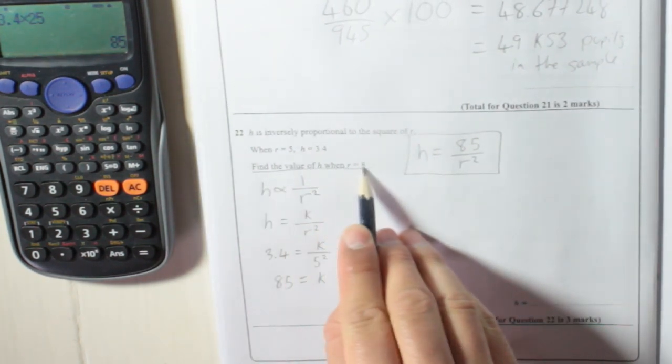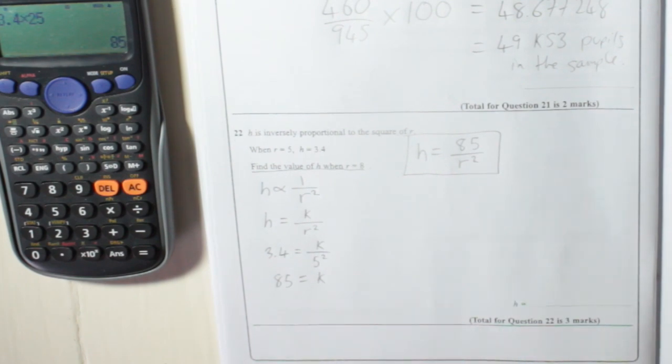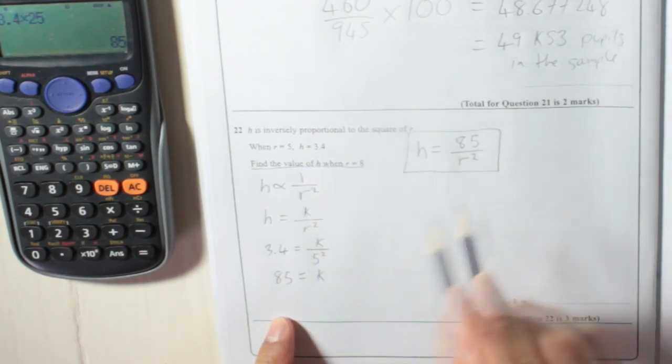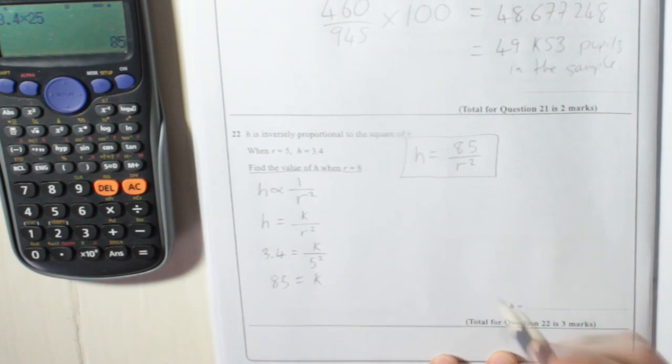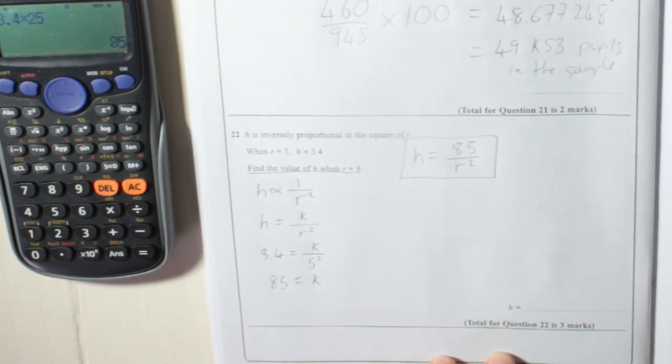Find the value of h when r is 8. Before we answer this question, we must have found this formula. And this is the process you go through to finding it. Now, this is proportionality. If you can't remember how to do it, you should look it up.